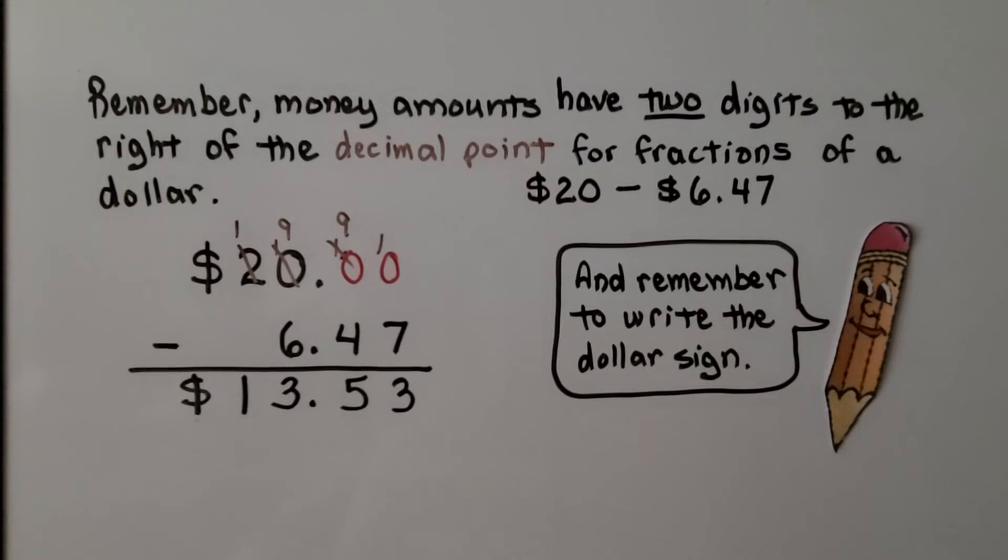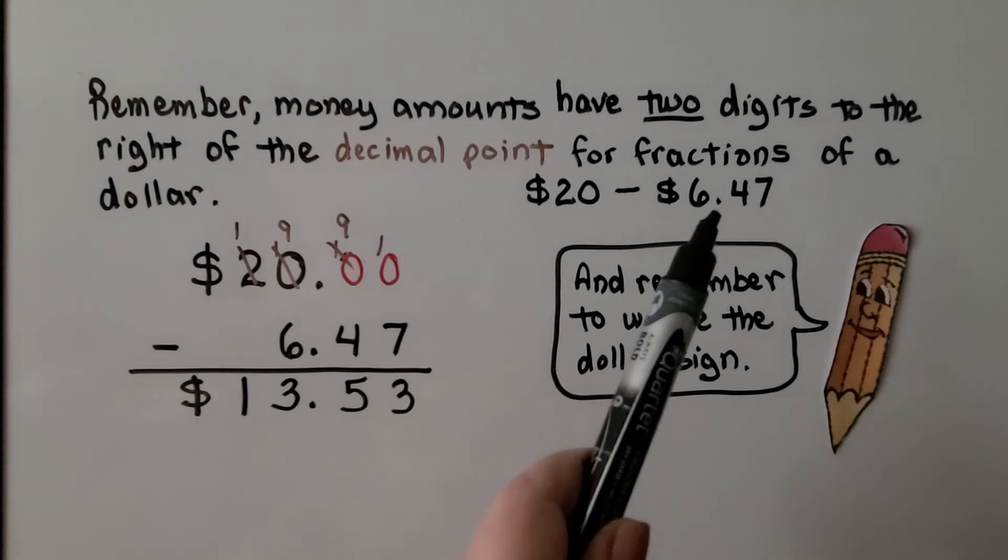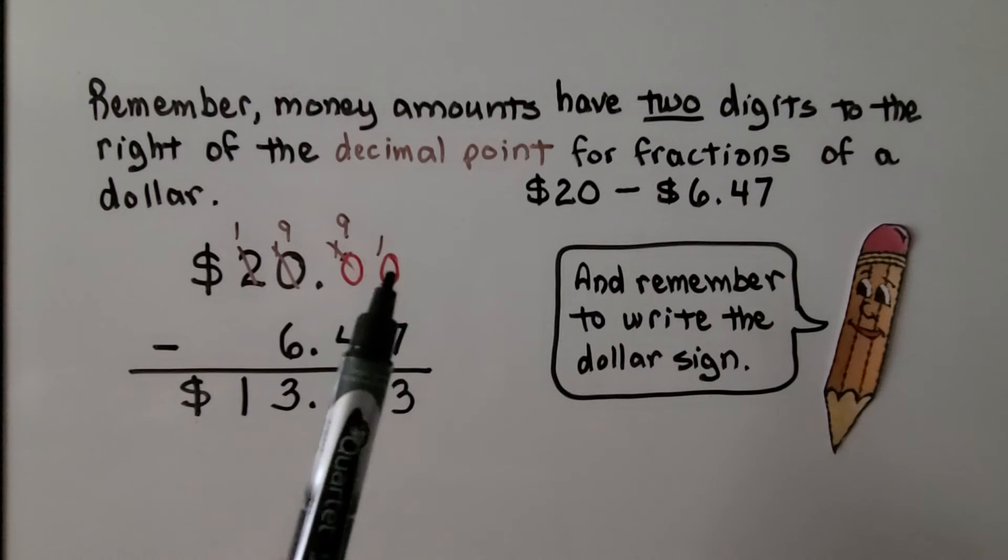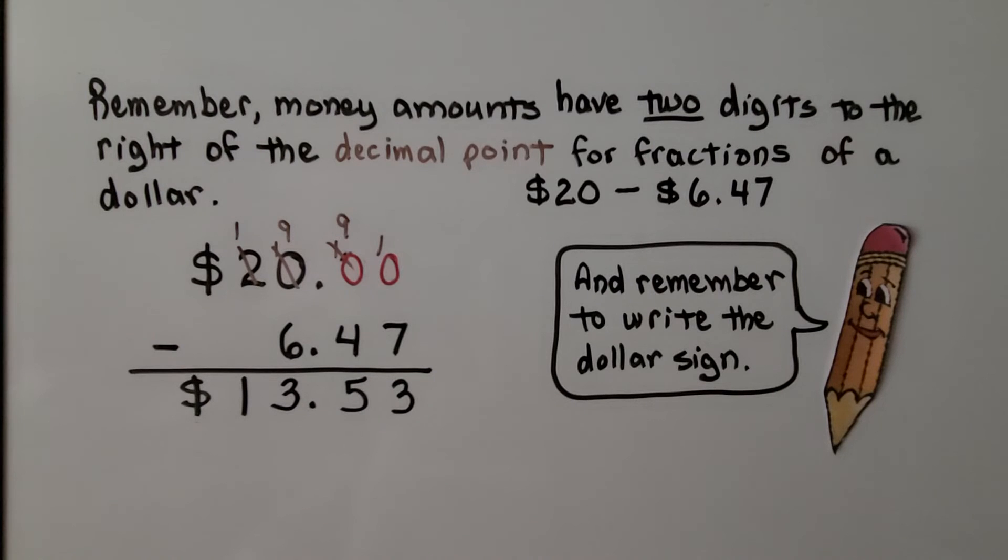Remember, money amounts have two digits to the right of the decimal point for fractions of a dollar. If we see $20 minus $6.47, we can write a couple of zeros here as placeholders to do our subtraction. And remember to write your dollar sign because we're dealing with money.